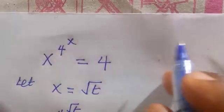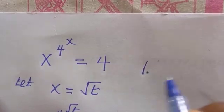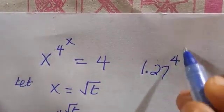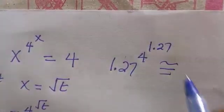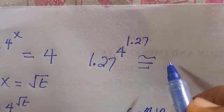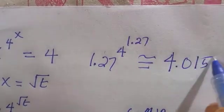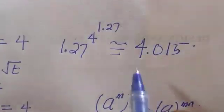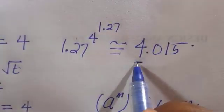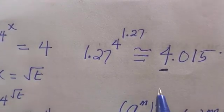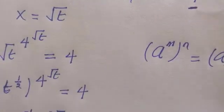If you try to verify this, when x is 1.27 raised to power 4 all the way to power of 1.27, this is approximately 4.015, which is very close to 4. So we can conclude that the approximate value is 1.27, and this is how I think this should be solved.